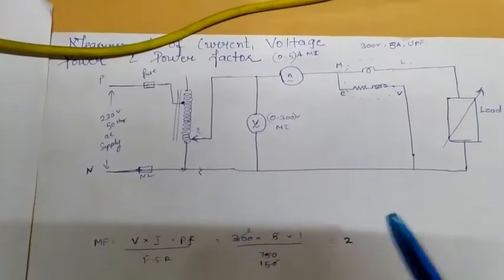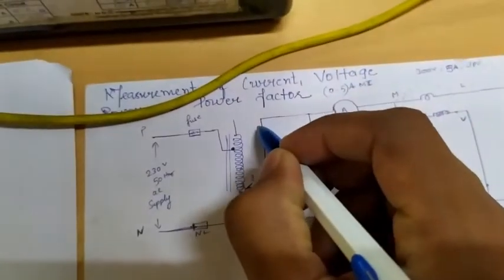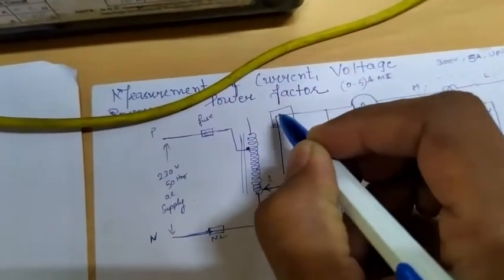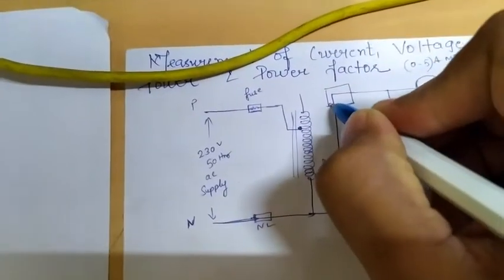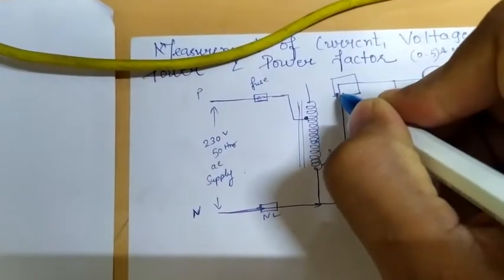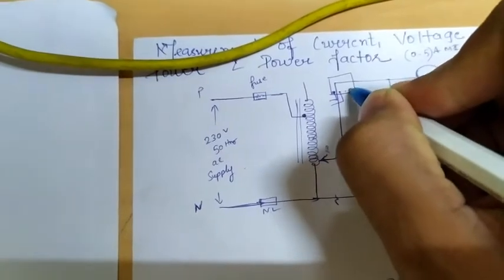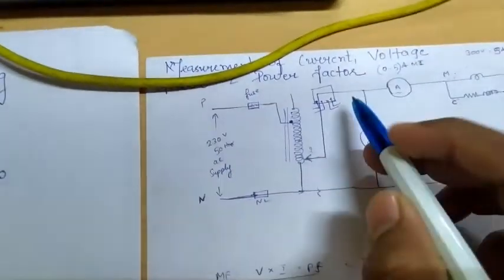In this previous circuit what we are going to do is we are going to connect one energy meter here, that's all. That is connected to the phase that is connected to the load. The circuit will be like this, I will explain here.